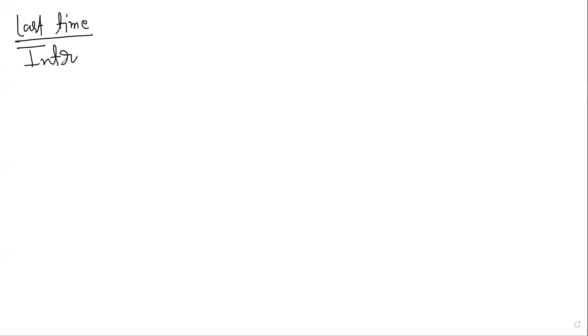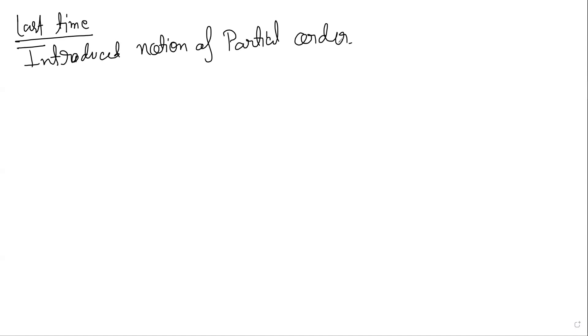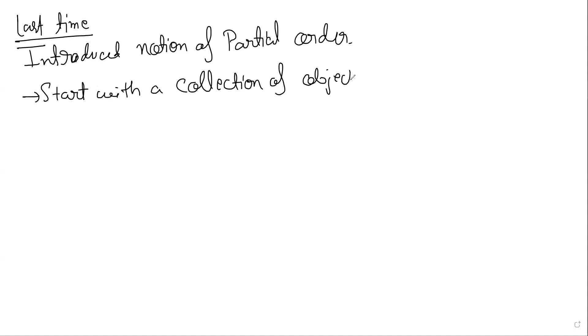We'll continue with this unorthodox thing — I will no longer call it an analysis class. These are general things which are useful in all places. Let me clean my tab; I didn't teach for the last many days. Last time we introduced the notion of partial order. What are we trying to do here? Basically, we start with a collection of objects of a similar nature.